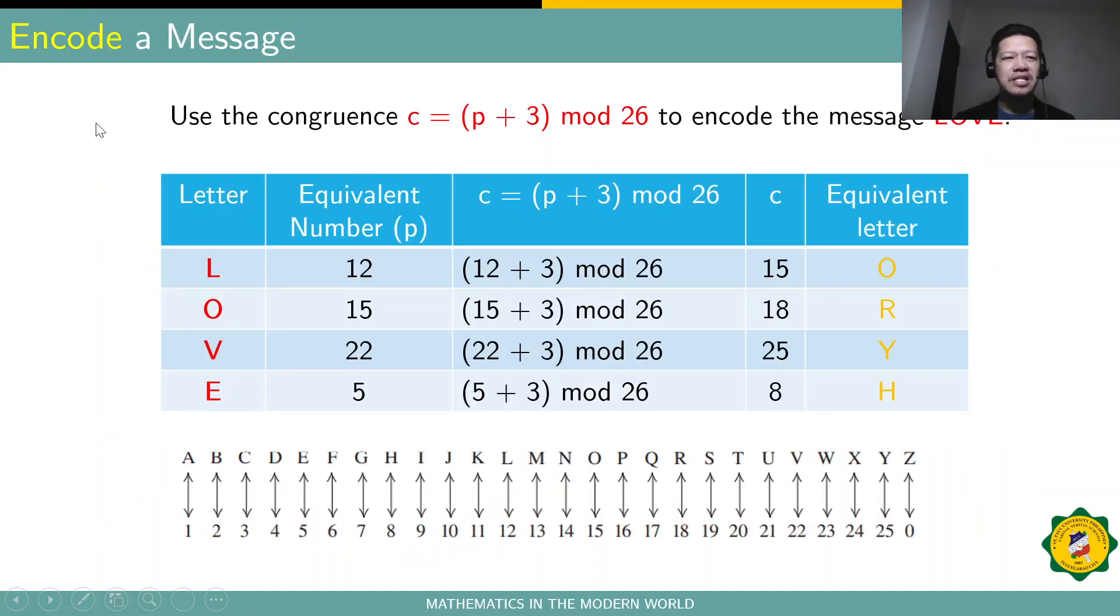Let's have an example on how to encode a message. For example, use the congruence C is congruent to P plus 3 modulo 26 to encode the message LOVE. So, you want to actually encode just a simple message LOVE. So, the first thing to do is to get the equivalent number of the letters L, O, V, E in the plaintext. So, you have L is actually 12, O is actually 15, V is 22, and E is 5. So, that's the letter P.